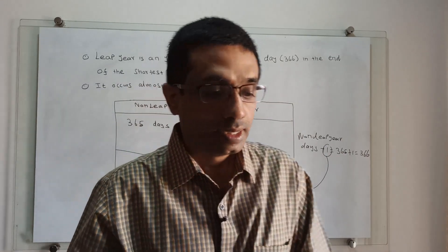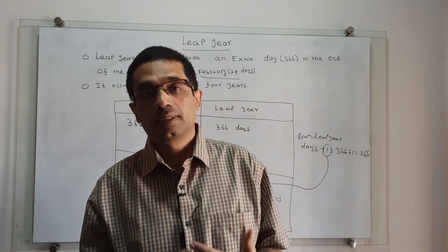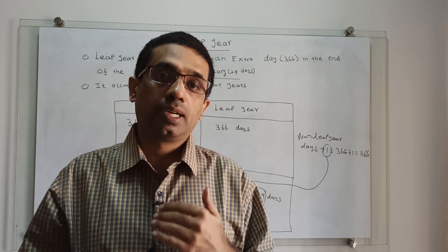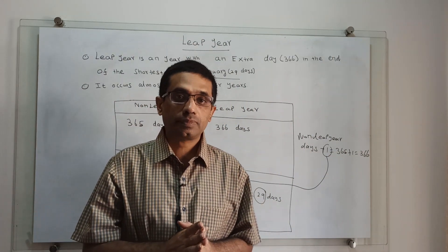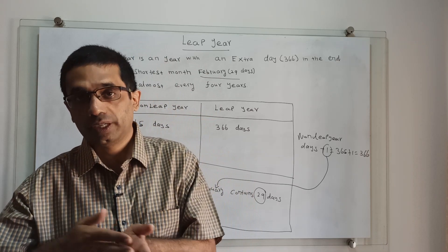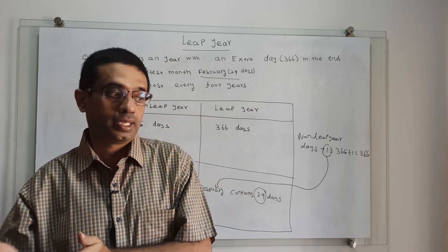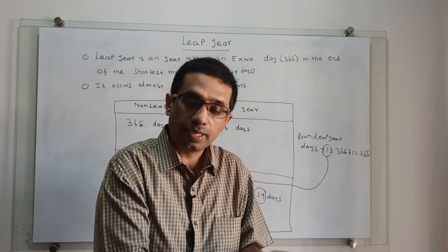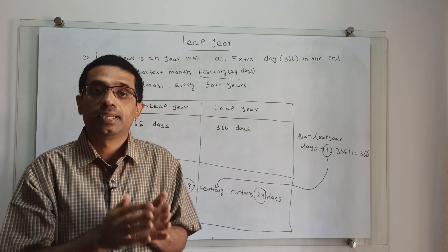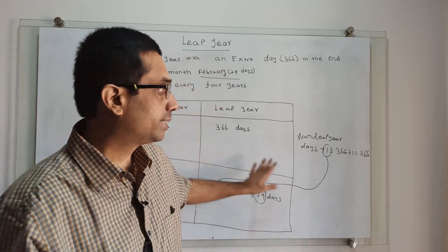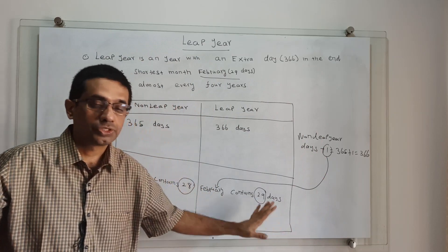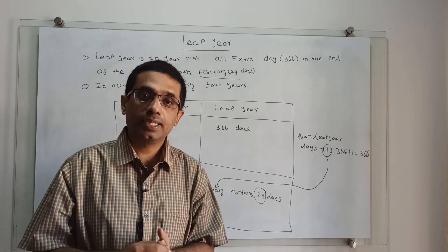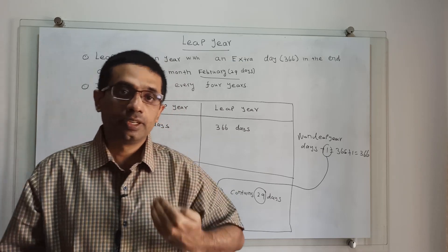So this is the difference between the leap year and non-leap year. In this video lecture we discussed what a leap year is — it contains 366 days, with one extra day added in the month of February. For a normal non-leap year, February contains 28 days; for a leap year, February contains 29 days. Leap year occurs repeatedly every four years.